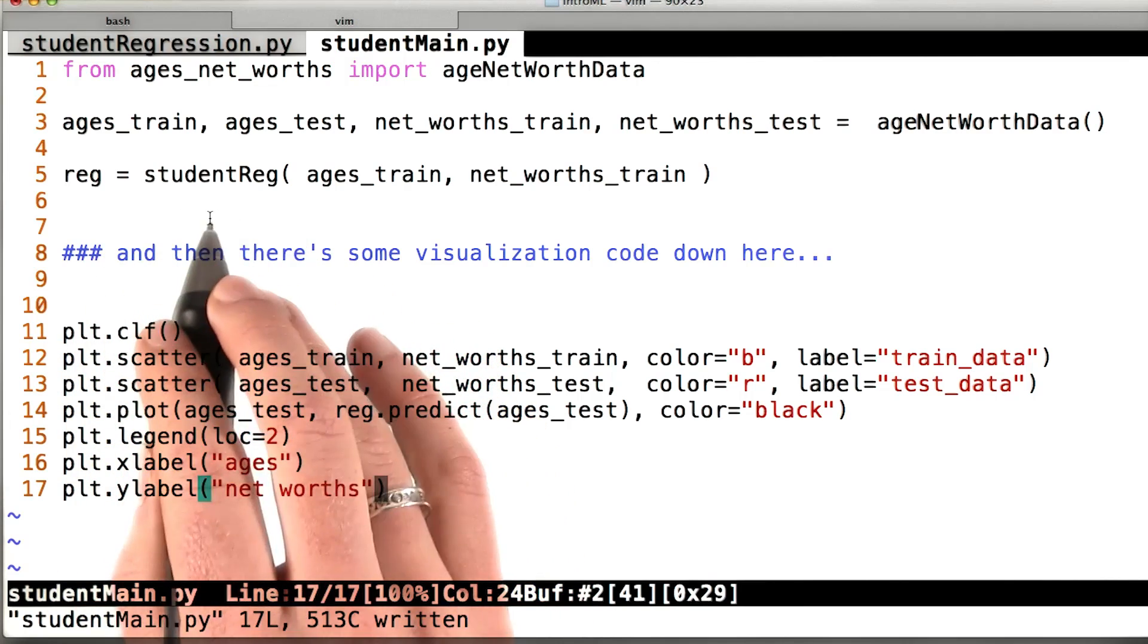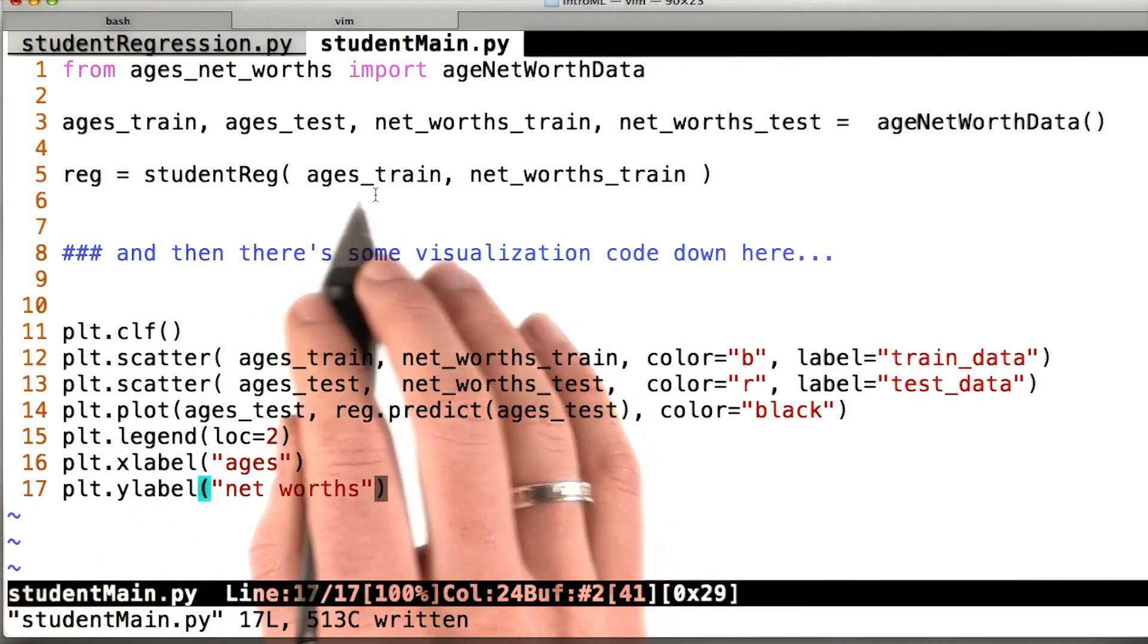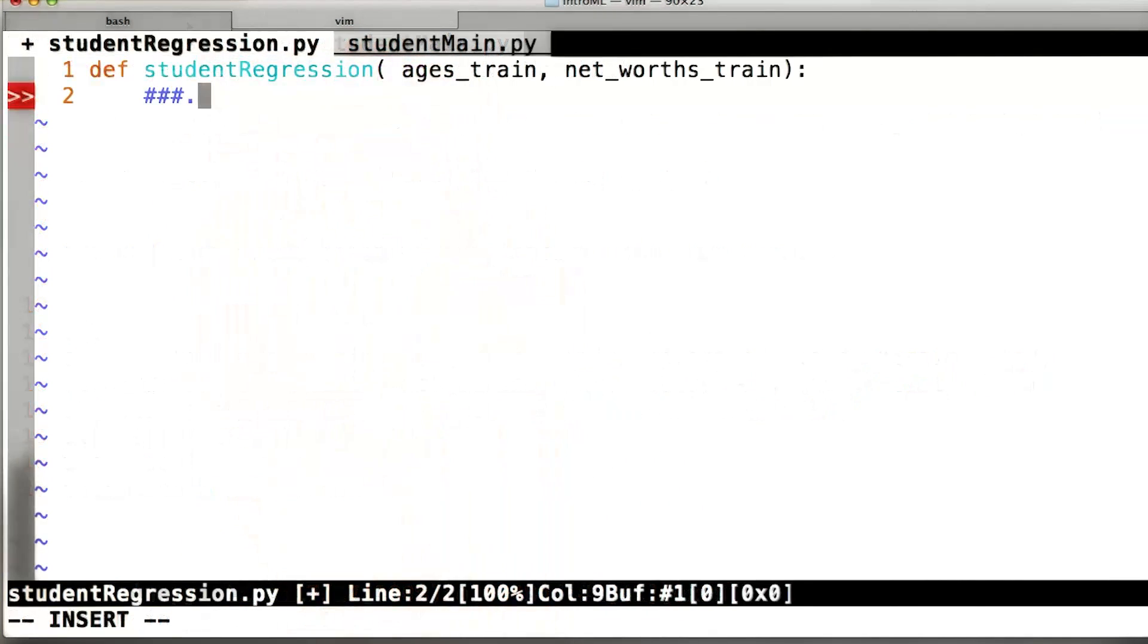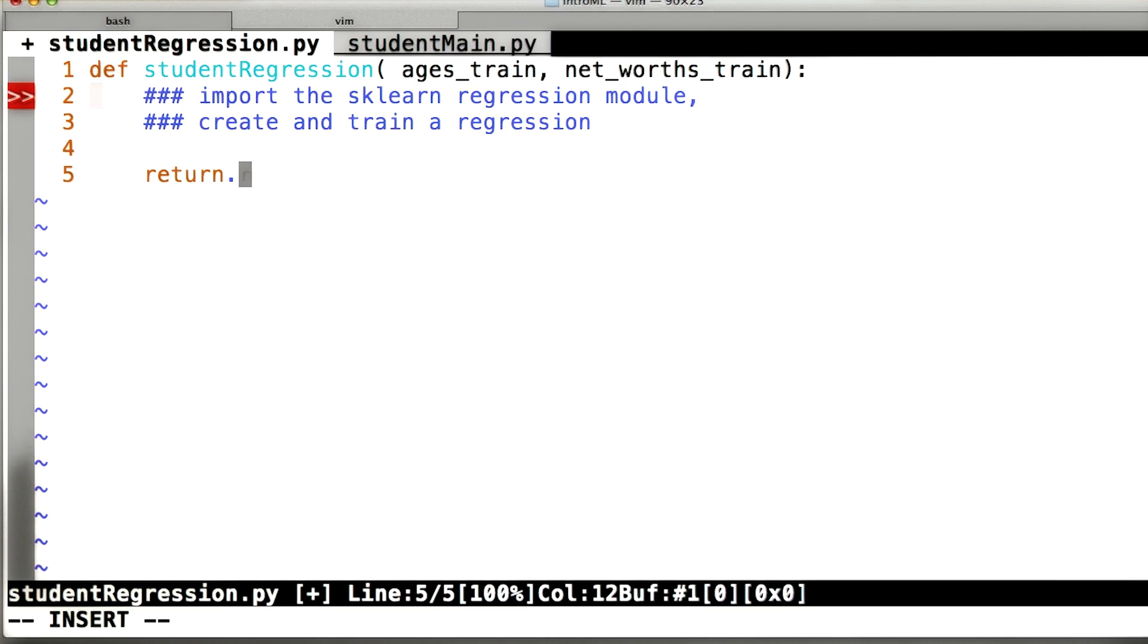So what is student reg doing? The first thing is I know that I'm sending the training ages data and net worths data. And what I want you to do here are a few things. The first is importing the sklearn regression module. And then you want to create and train your regression. You want to name your regression reg because you're going to be returning an object named reg, so it will be looking for something with that name. So that's the assignment in the quiz. Give it a shot.